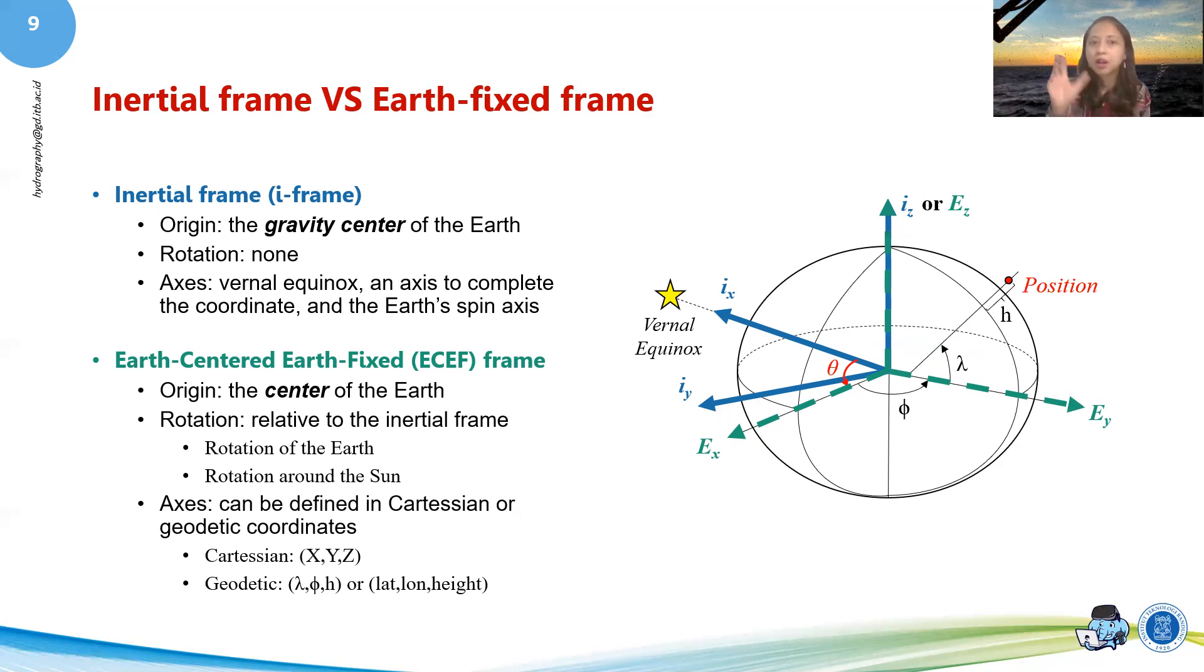So instead of an inertial frame that we cannot really understand where it is and how it looks like, now we can understand it in terms of Cartesian, X, Y, and Z, or in geodetic form, which is latitude, longitude, and height.